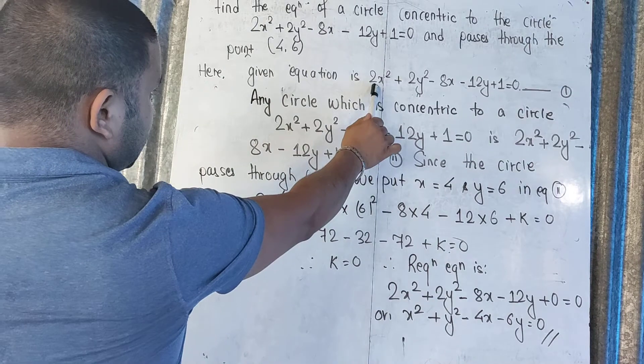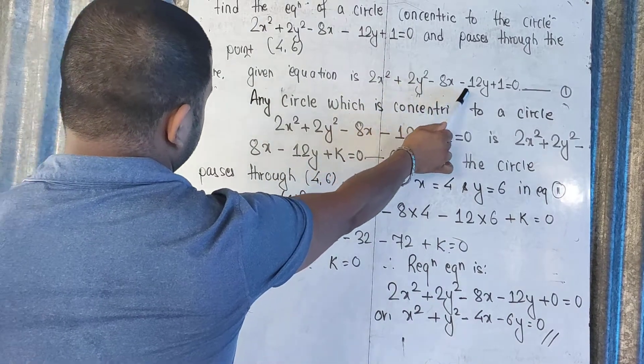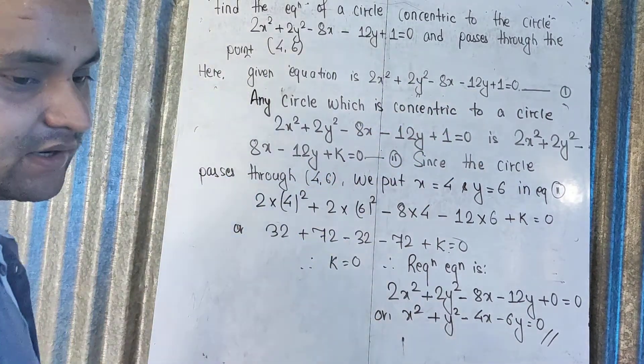Here, circle equation 2x² + 2y² - 8x - 12y + 1 = 0, equation of circle is given.